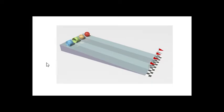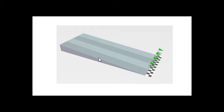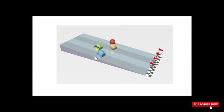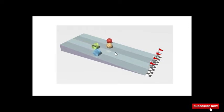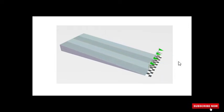If I release these four objects from the same height, the order in which they arrive is: first the solid sphere, then solid cylinder, then hollow sphere, and then hollow cylinder.